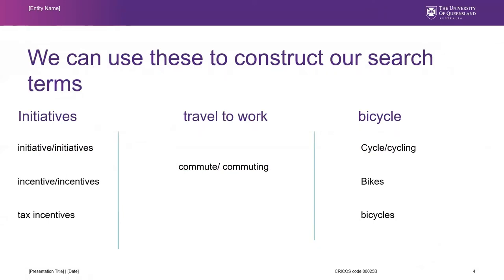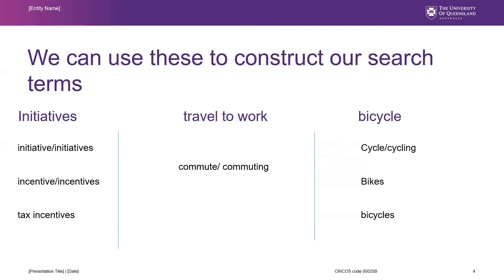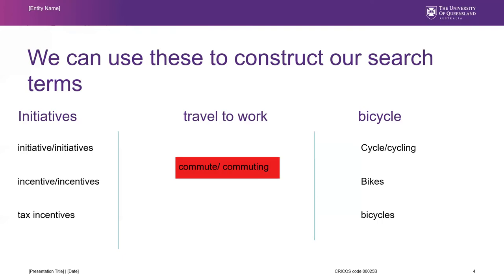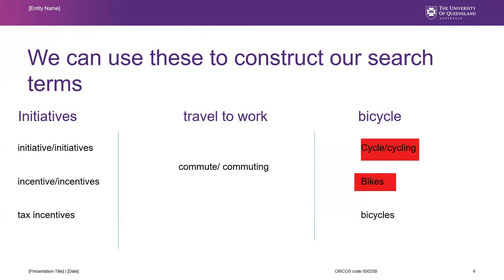Try to find synonyms or similar and related words to your key concepts. In this example, the key concept 'initiatives' can be mentioned in singular or plural form. We are also interested in tax incentives or tax benefits related to the topic, so we can add the phrase 'tax incentives' to our search. Similarly, 'travel to work' can also be stated as commute or commuting, and other words for bicycle are cycle, cycling, bikes, and bicycles.